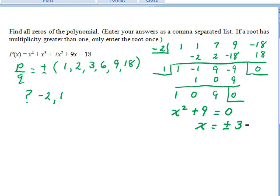which is plus or minus 3i. And so our zeros are, in fact, negative 2, 1,